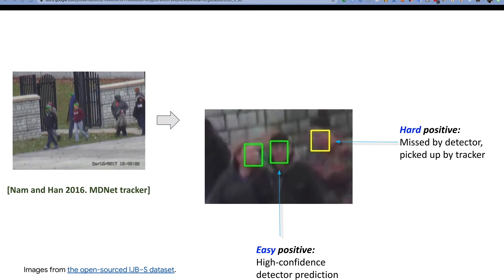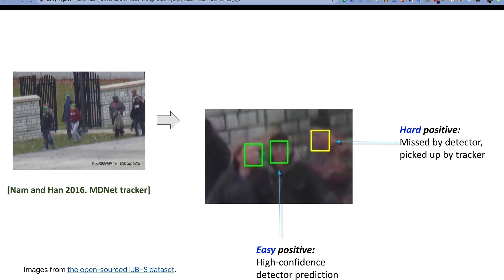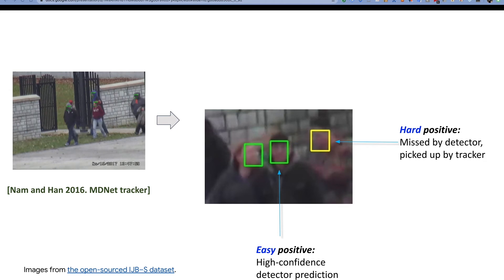On the right picture, the green box corresponds to easy examples. The red box corresponds to hard examples. What's the difference? Easy samples are where the detector succeeds with high confidence. Hard examples are where missed by detector, but picked up by tracker.